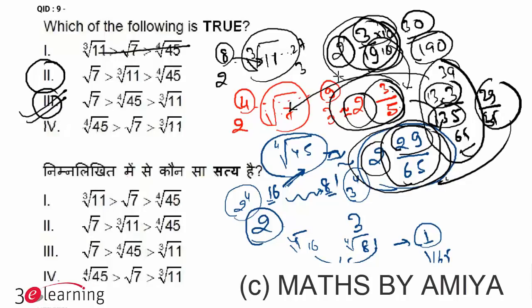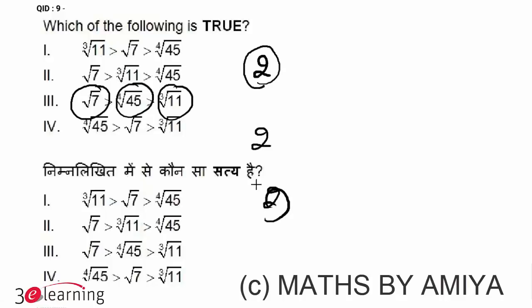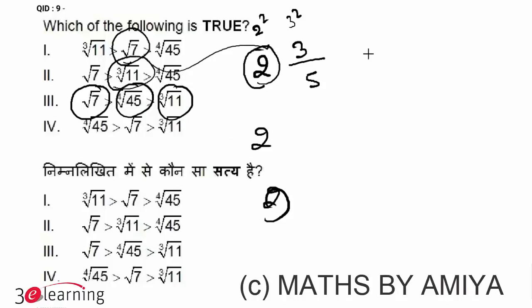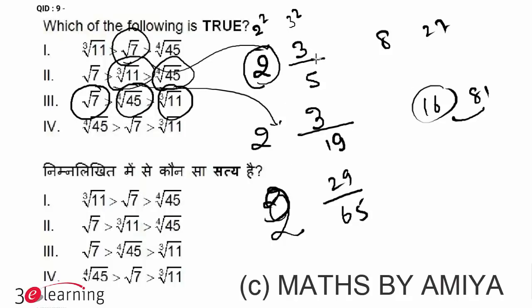Let's check how much time it takes. All values are between 2 and 3 so there is no need to work on the integer part. For root 7 the gap is 5 and the difference is 3, giving 3 by 5. For root 11 the cube gap is 19 and difference is 3, giving 3 by 19. For the fourth root of 45, the gap is 65 and the difference is 29, giving 29 by 65. We compare these three fractional values.